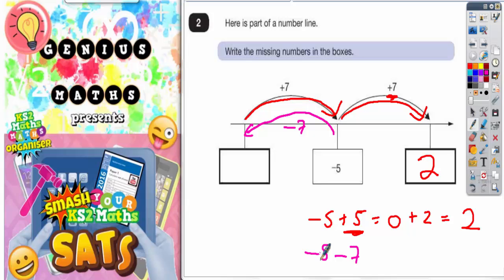Well, if you're on negative 5 and you go down another 7, it's like saying you've spent 5 pounds and then you've spent another 7 pounds. So altogether, you've spent 12 pounds.